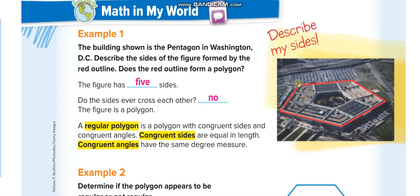Inside the polygon types, we have two kinds: a regular polygon and a not-regular polygon. A regular polygon is a polygon with congruent sides and congruent angles. Congruent sides are equal in length and congruent angles have the same degree measure. So in a regular polygon, all the sides are the same length and all the angles are the same degree.